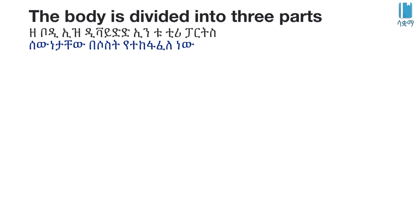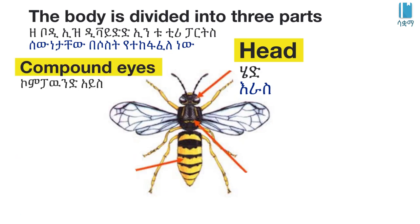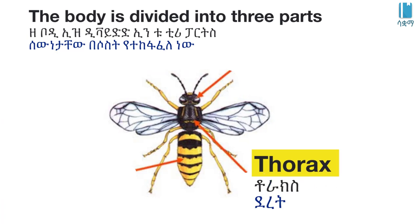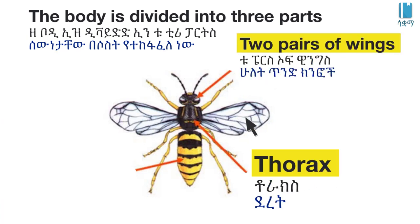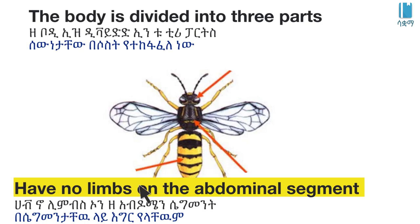Insects have three body parts: head, thorax, and abdomen. On the head there are compound eyes and one pair of antennae. The thorax bears one or two pairs of wings and three pairs of jointed legs. The abdomen contains multiple segments.